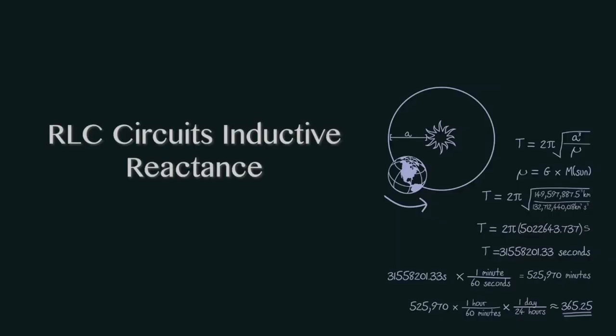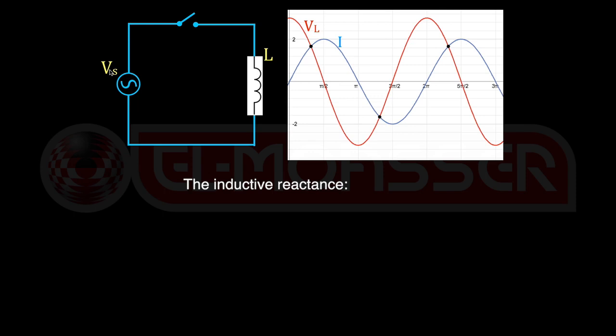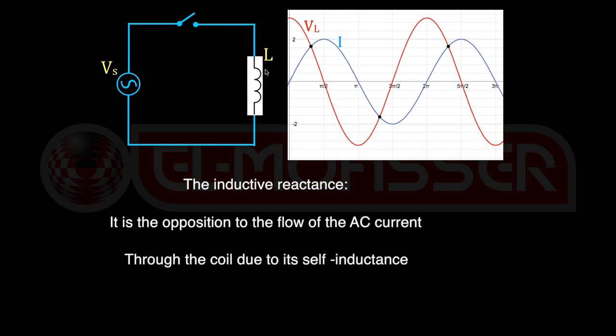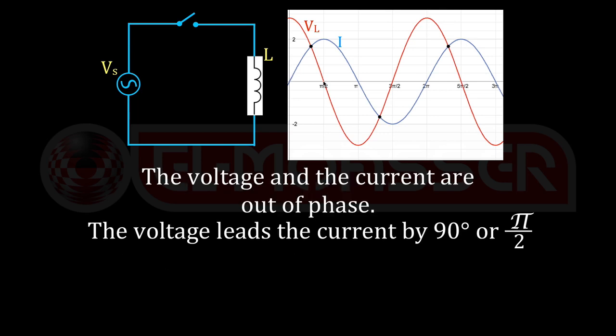RLC circuits: the inductive reactance. It is the opposition to the flow of the AC current through the coil due to its self-inductance. The voltage V leads the current I by a phase angle of quarter cycle or 90 degrees.